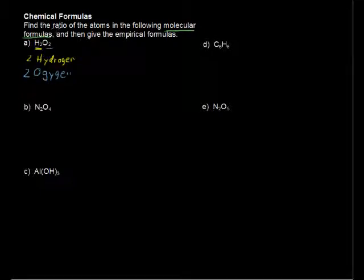If we are asked to give the ratio, then the ratio of these atoms is really just like simplifying a fraction. So 2 over 2 equals 1 over 1. So we have one hydrogen atom to one oxygen atom, and that's the ratio, 1 to 1.